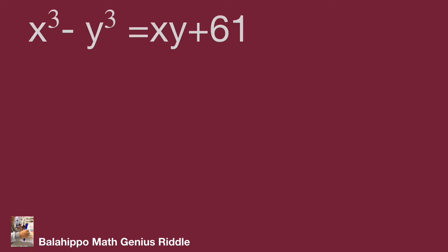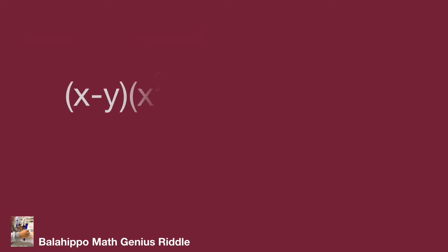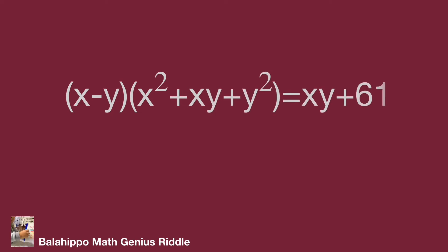Back to the equation: x cubed minus y cubed equals x times y plus 61. Factorize x cubed minus y cubed to get the quantity (x minus y) multiplied by the quantity (x squared plus x times y plus y squared), which equals x times y plus 61.